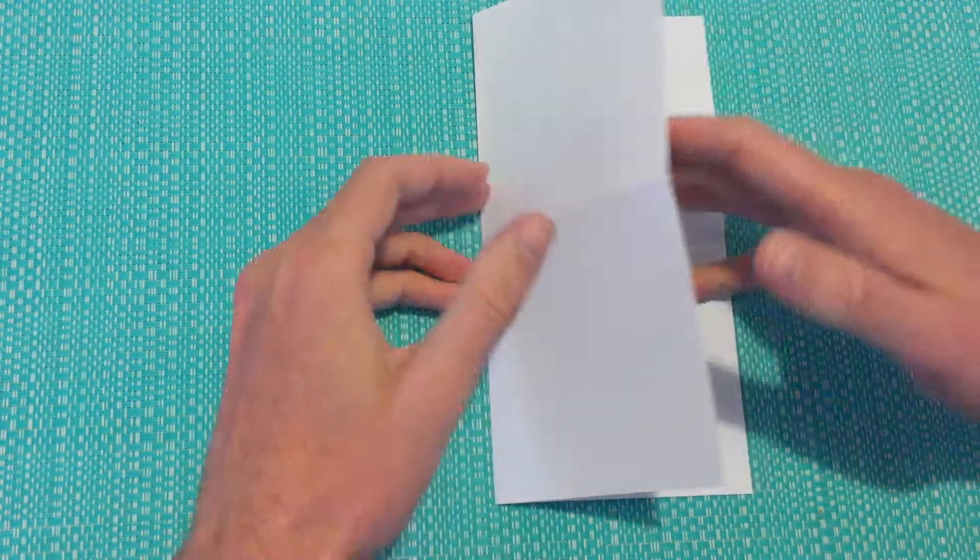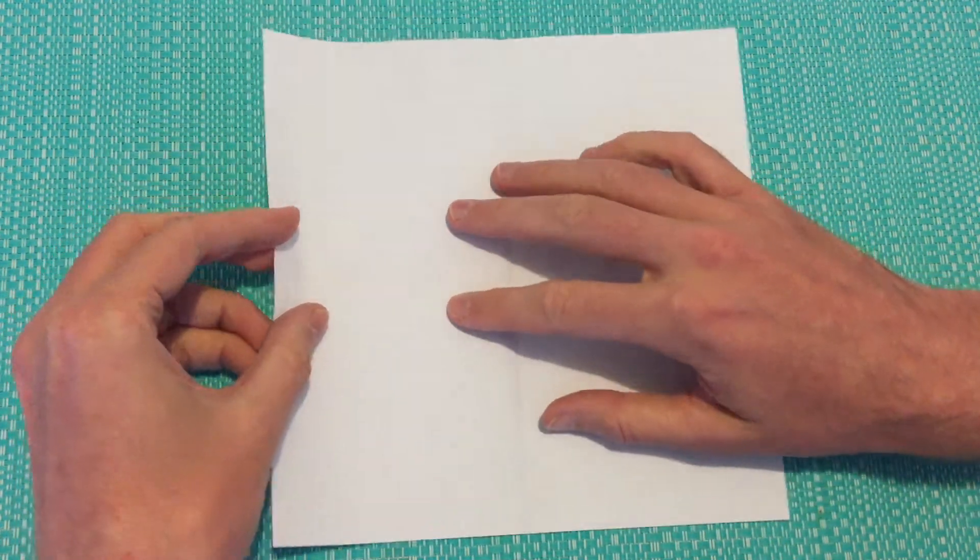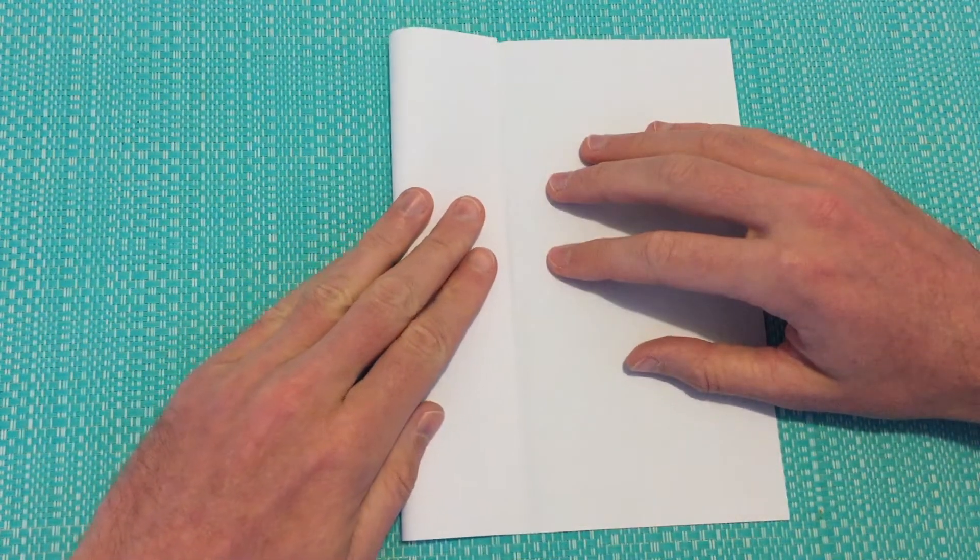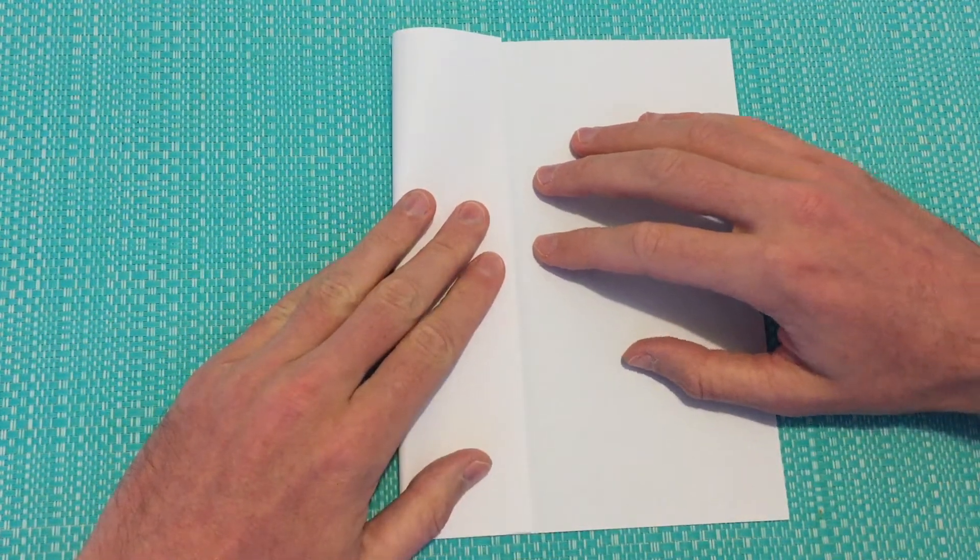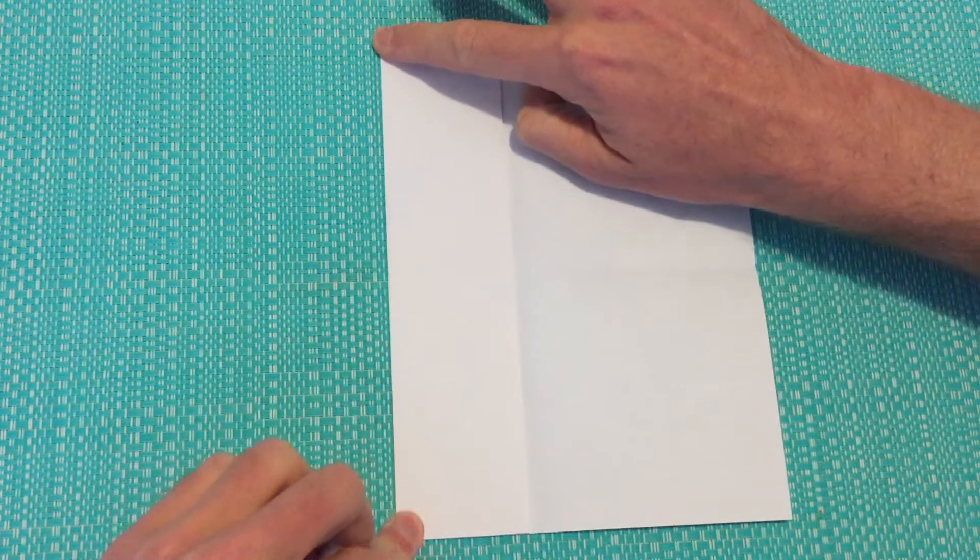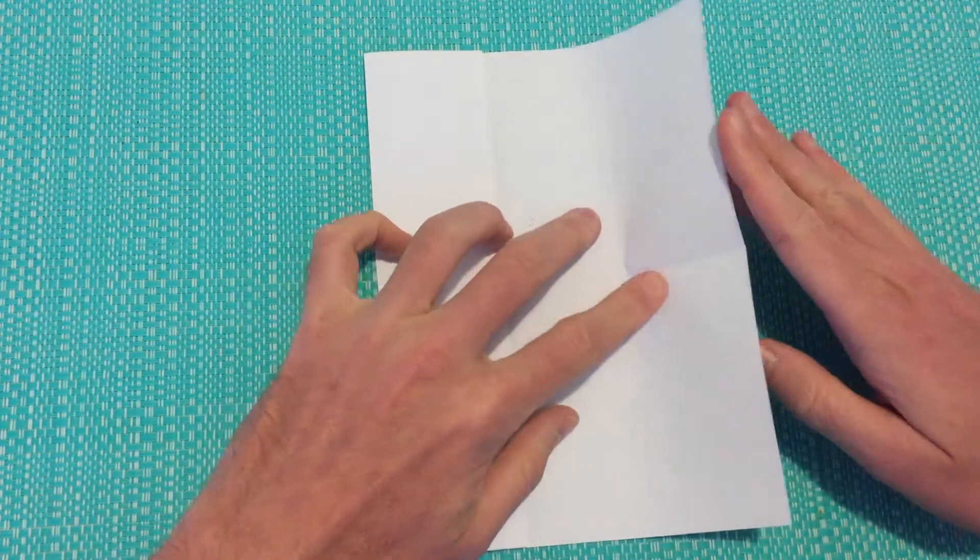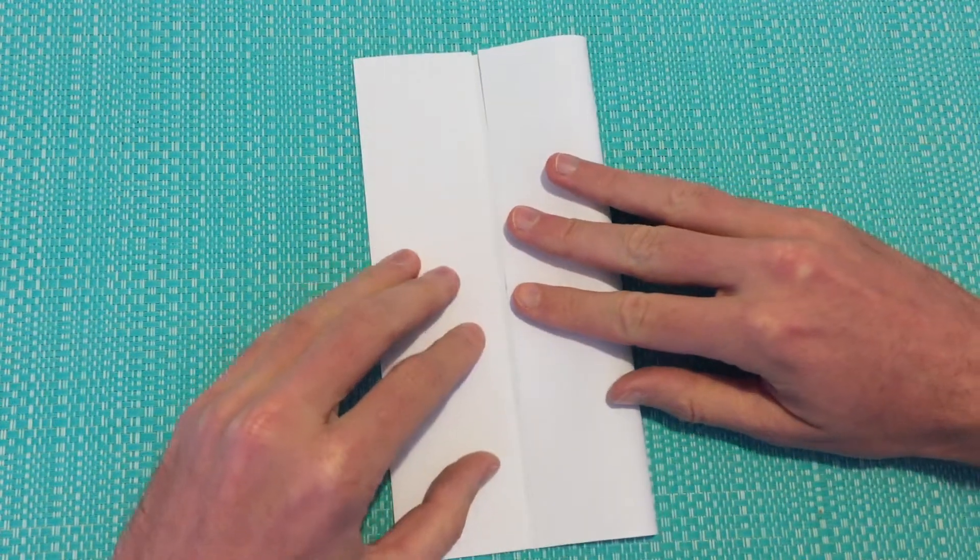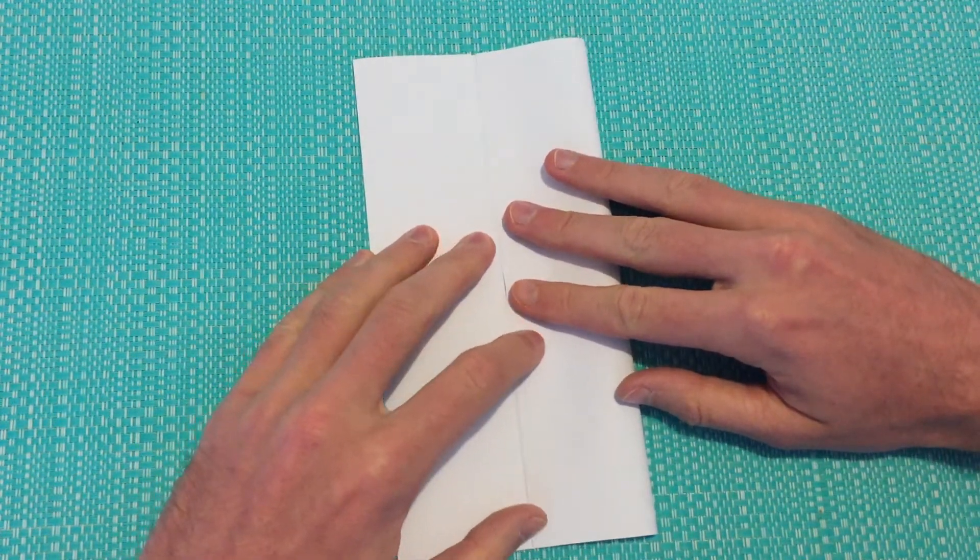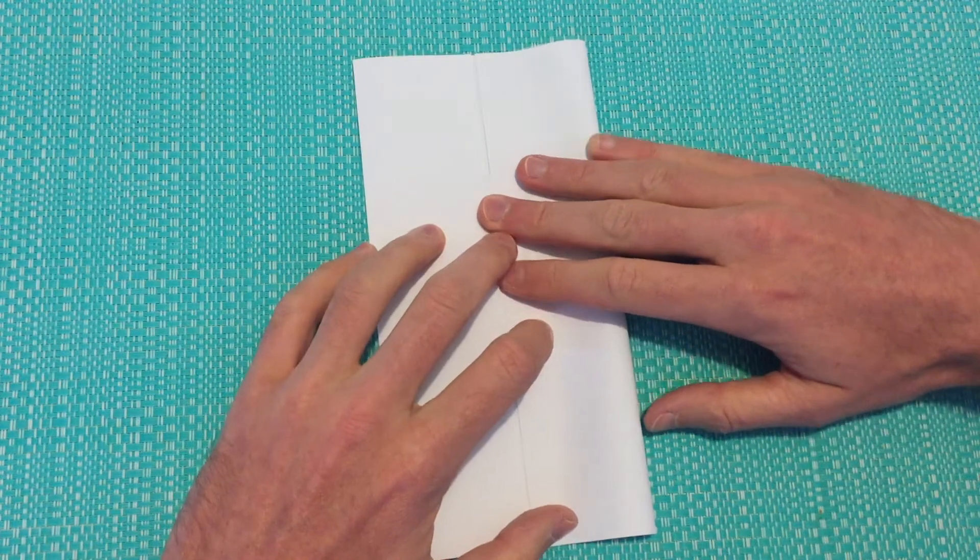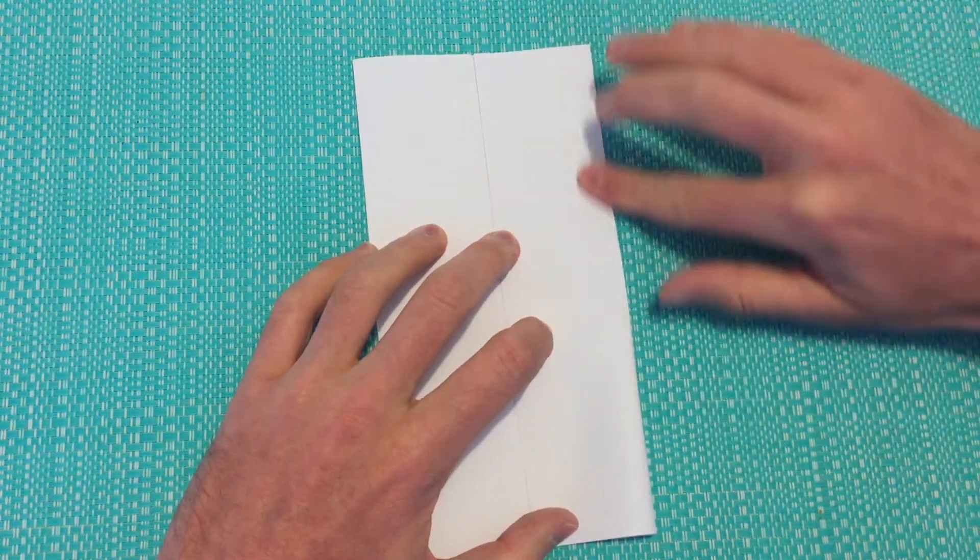We can open that one up as well and we'll fold our left-hand side into our center line, create a crease and then fold our right hand side into the center line and once again we'll create a crease.